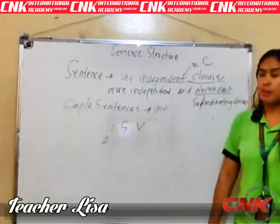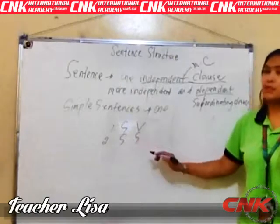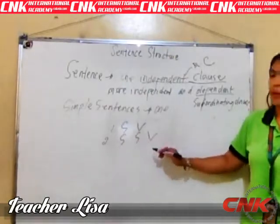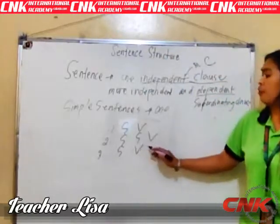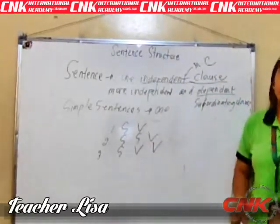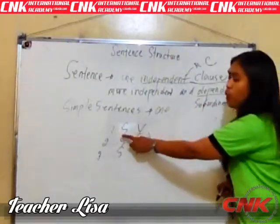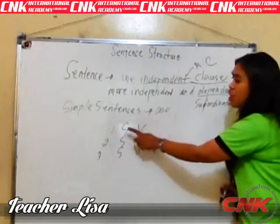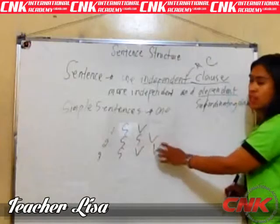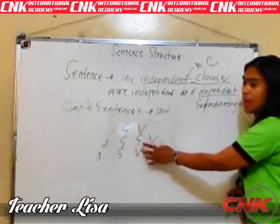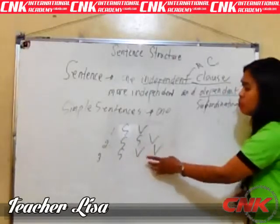Second pattern, we have subject, subject, and verb — two subjects and one verb. Lastly, we have subject and two verbs — one subject and two verbs. So as you can see, we have the easiest patterns: number one is S+V (one subject and one verb), number two is S+S+V (two subjects and one verb), and number three is S+V+V (one subject and two verbs).